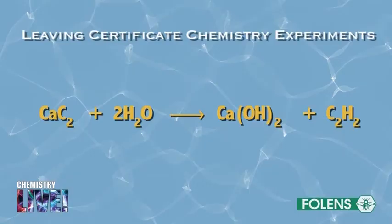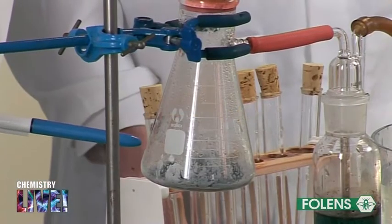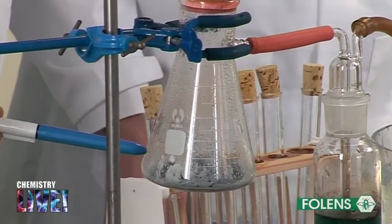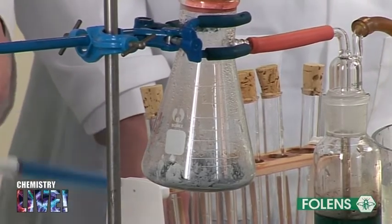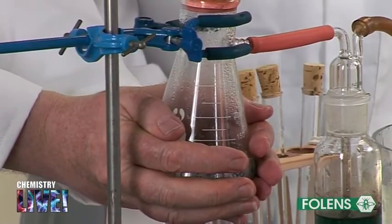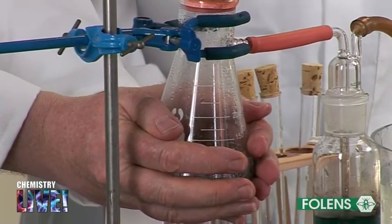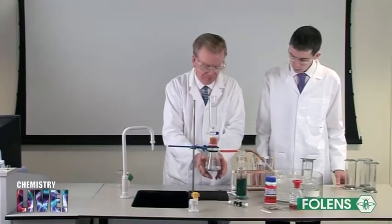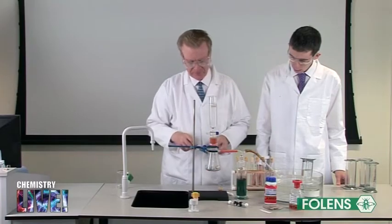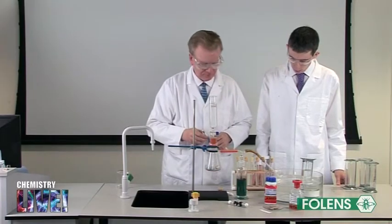The equation for the reaction is shown on the screen. Note the formation of white calcium hydroxide inside the flask. Place your hand on the outside of the flask. When you perform this experiment yourself, write down what you notice. In the next part of the experiment, we will carry out a number of tests on the gas.